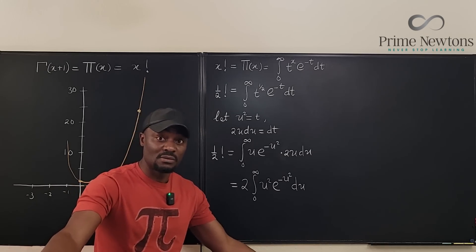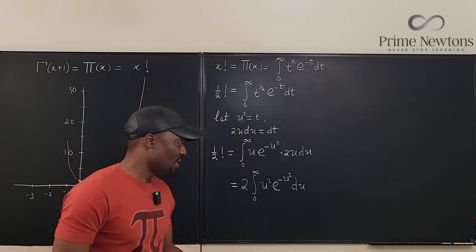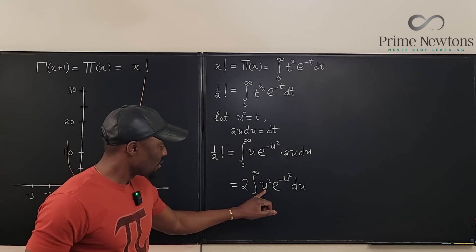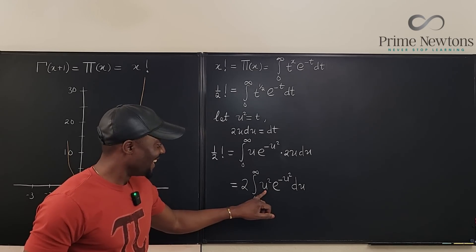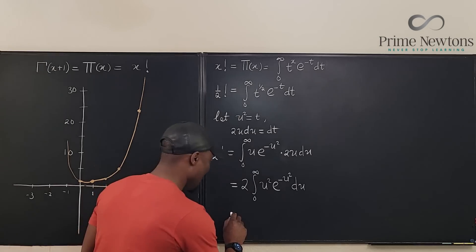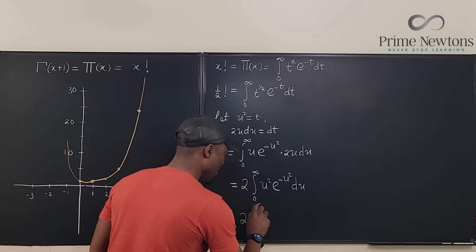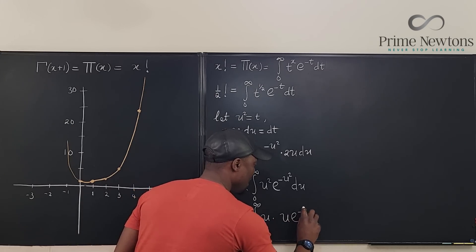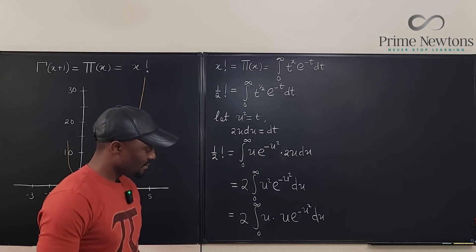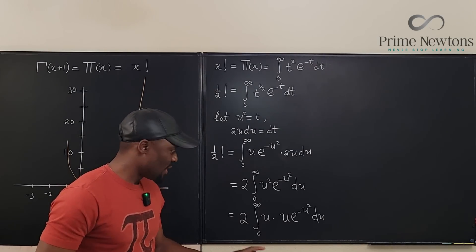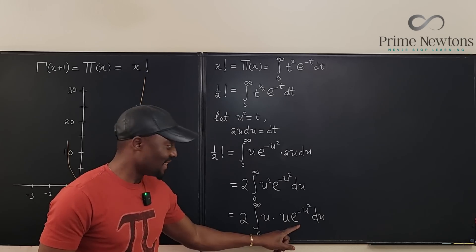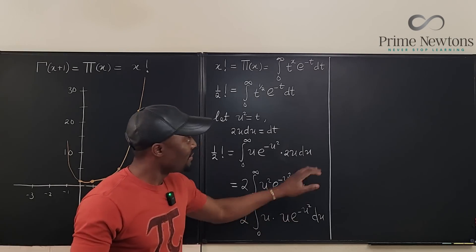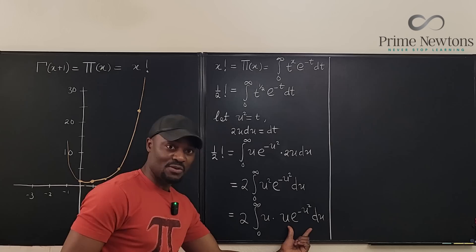We still need to do integration by parts because that u squared is not going away on its own. The key is to split u squared into u times u, so we can write this integral as two times the integral from zero to infinity of u times u e to the negative u squared, du. When we do integration by parts, we'll differentiate the first u and integrate u e to the negative u squared — and that second part can be integrated.